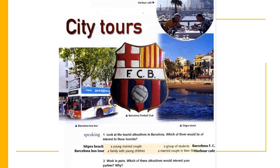Picture number one is the picture of Harbour Cafe. Harbour Cafe may be visited by a married couple in their 50s. Picture number two is the picture of Barcelona Bus Tour. Barcelona Bus Tour may be visited by a family with young children.